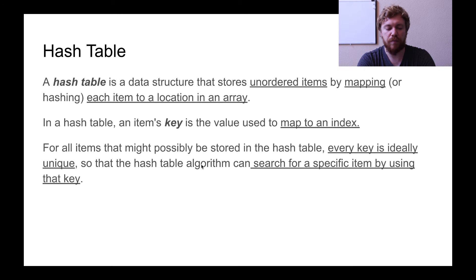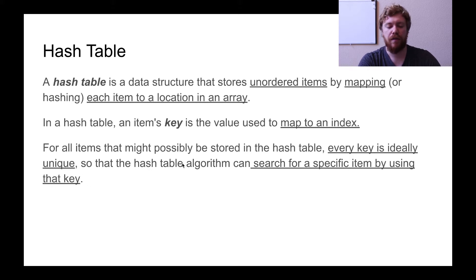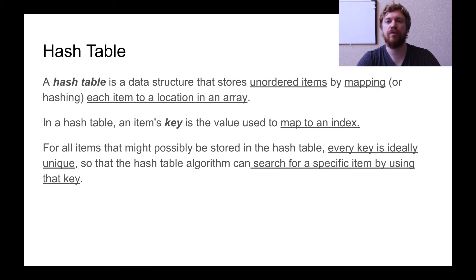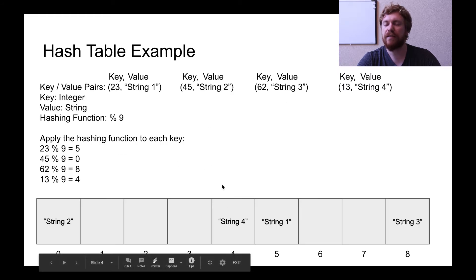Going back a few slides, some of the comments should make more sense now. In a hash table, an item's key is the value used to map to an index — that mapping is the hash function. For all items, every key is ideally unique so the algorithm can search for a specific item using that key. We want every key to be unique so that the hashing function also produces unique indices — otherwise two values might map to the exact same index.